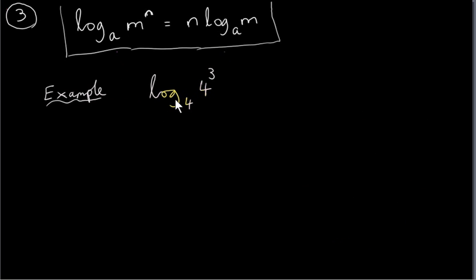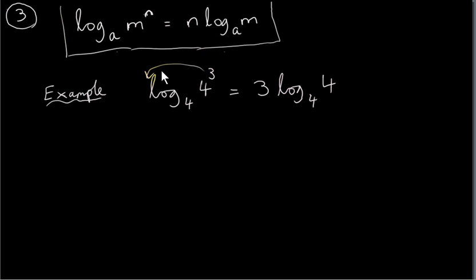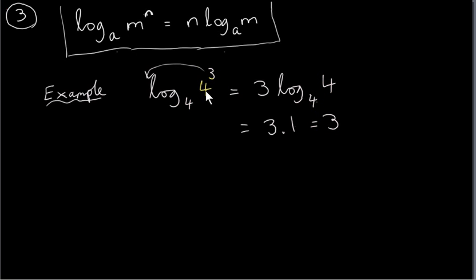Let's look at one quick example. Suppose we want to get log of 4 to the power of 3 to base 4. We can pull down this power in front, so it's 3 times log of 4 to base 4. That's equal to 3 times 1, because log of 4 to base 4 is 1, since 4 to the power of 1 is 4. Actually, 4 to the power of 3 is 64, and log of 64 to base 4 is 3, because 4 to the power of 3 is 64.